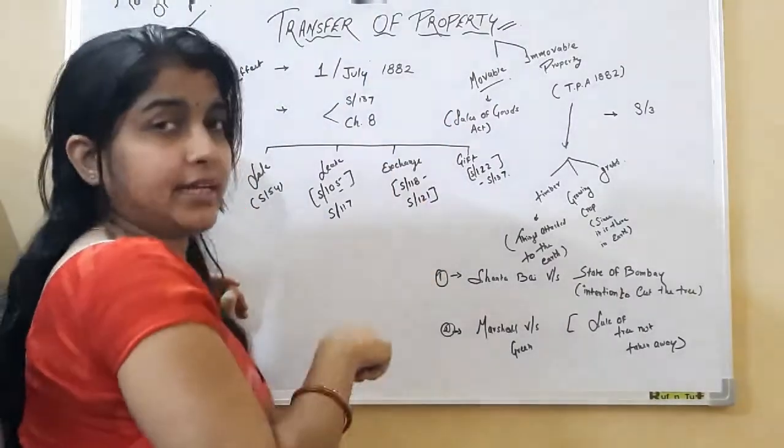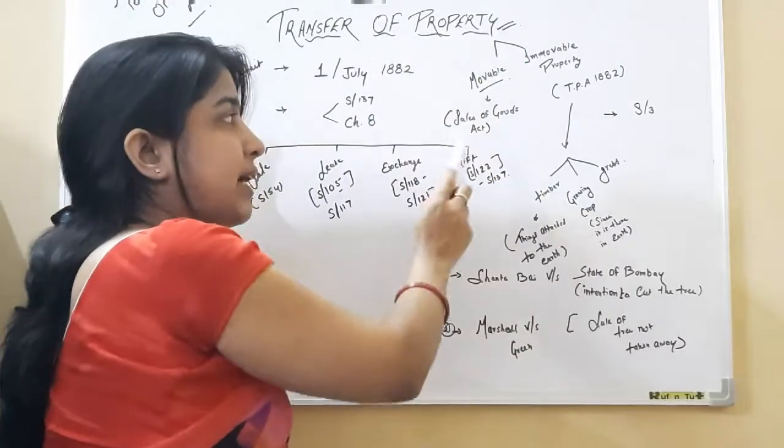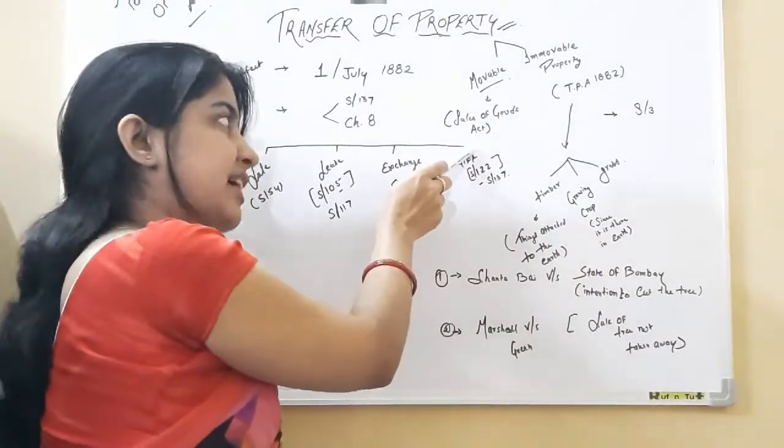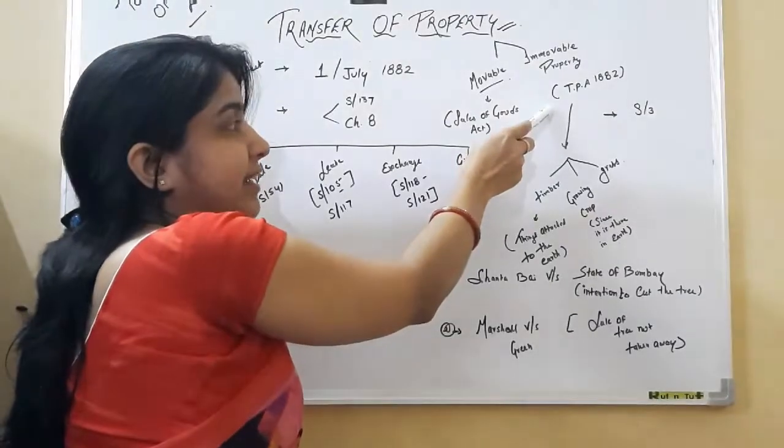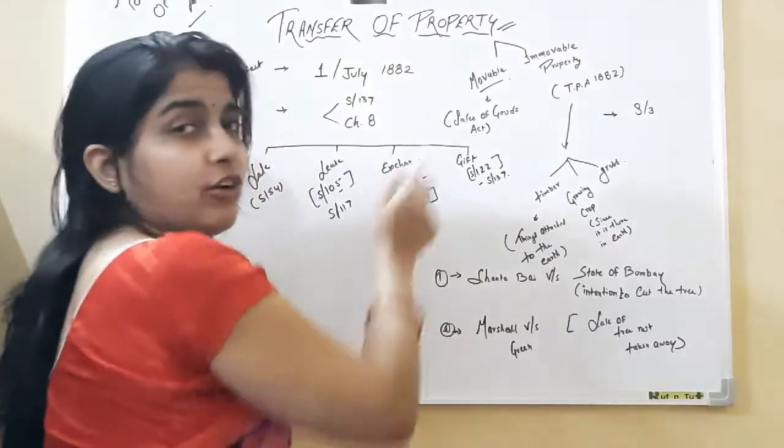But under the Transfer of Property Act, the movable property is not defined anywhere. The immovable property is defined under the Transfer of Property Act 1882 under section 3 of this act.